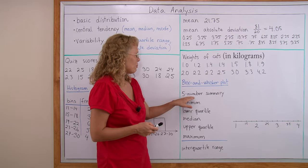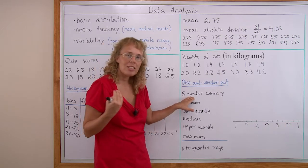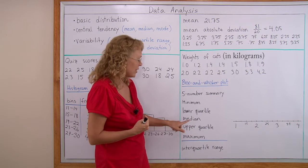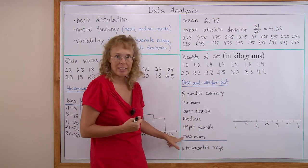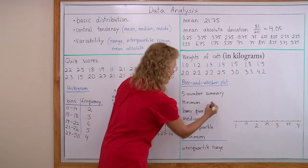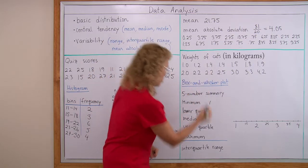To do that we need the so-called five number summary: the minimum, lower quartile, median, upper quartile and the maximum. Minimum and maximum are easy - minimum is 1 here, maximum 4.2.